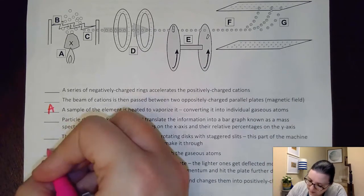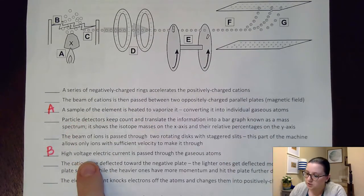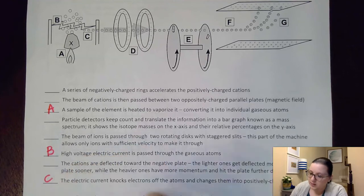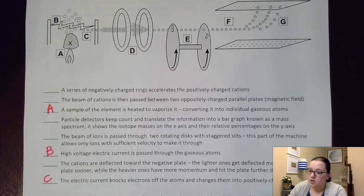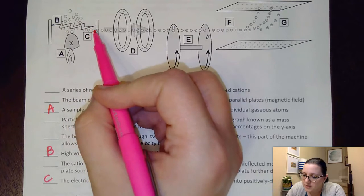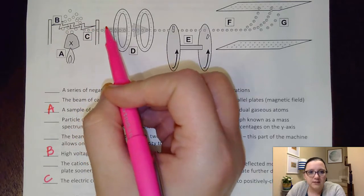The next step is this guy right here. High voltage electric current is passed through the gaseous atoms. What that will do is this step right here. The electric current will knock off electrons and change them into positively charged cations. So you can notice here as we run that electricity through, you notice that now our little elements have those plus signs on them.